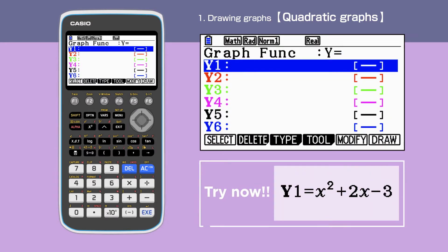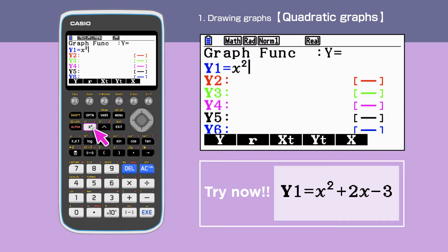First, we are going to draw a quadratic graph. Check that the graph function shows y equals, then enter the equation y1 equals x squared plus 2x minus 3.